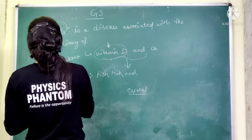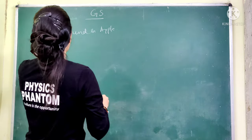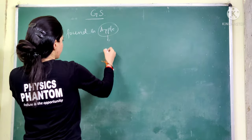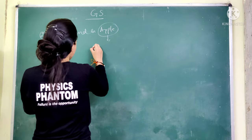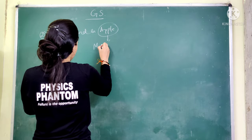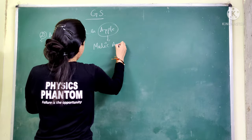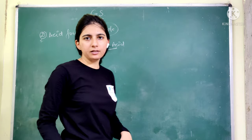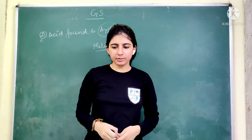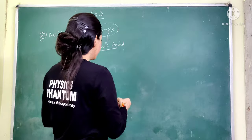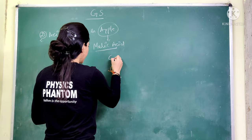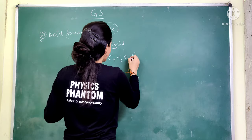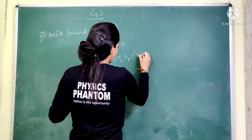The second question is: What acid is found in apple fruit? The answer is Malic acid. Malic acid is found in apple, and its molecular formula is C4H6O5.